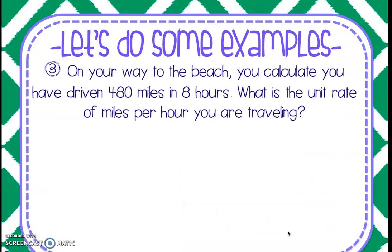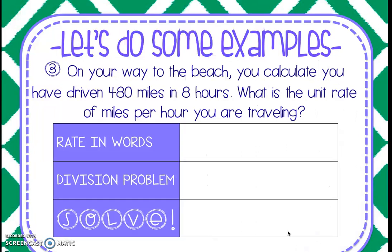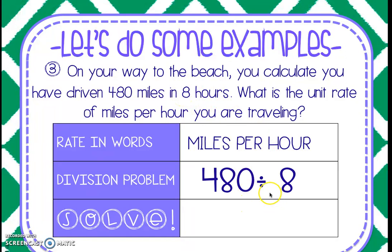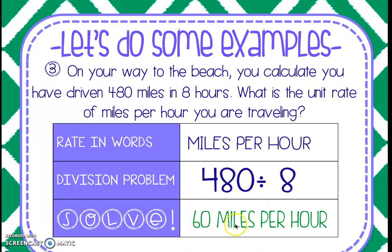Number three. On your way to the beach, you calculate that you have driven 480 miles in eight hours. What is the unit rate of miles per hour that you are traveling? Write the rate in words: miles per hour. Going back into the problem — 480 miles, 'per' tells us to divide, by eight hours. Our division problem is 480 miles divided by eight hours. When we plug that into our calculator, that tells us we're traveling 60 miles per hour — 60 miles every one hour.